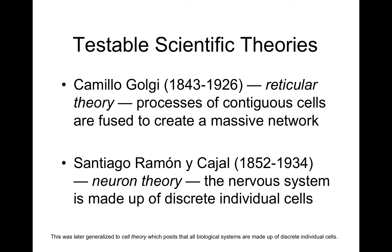Camilo Golgi believed that the processes — the axons and dendrites of neurons — are fused together to create a massive network. Ramon Cajal, on the other hand, believed that the nervous system is made up of discrete individual cells. Golgi and Cajal battled throughout their scientific careers, and their war of words even extended to the Nobel Prize ceremony in Stockholm, where the two men were honored for their contributions to neurophysiology. When given their chance at the podium, each man used the opportunity to attack the other. In the end, new brain imaging techniques confirmed the neuron theory of Cajal, but their decades-long dispute makes for interesting reading.